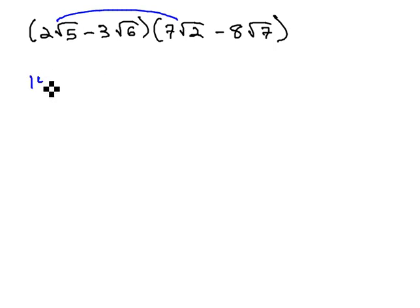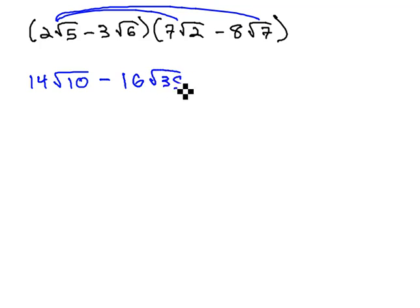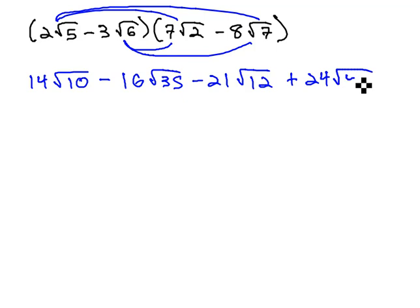Foiling, we have 2 times 7, or 14, root 5 times 2 is 10. Multiplying by the negative 8 root 7, gives us negative 16 root 35. Now, distributing the negative 3 root 6 through, gives us negative 21 root 12. And finally, positive 24 root 42.